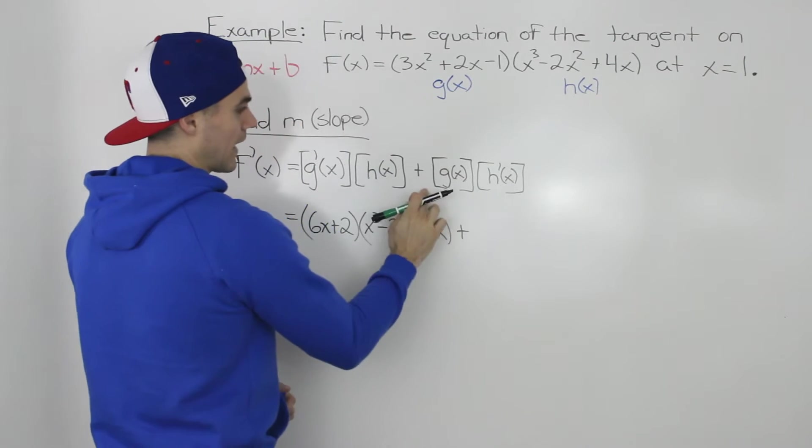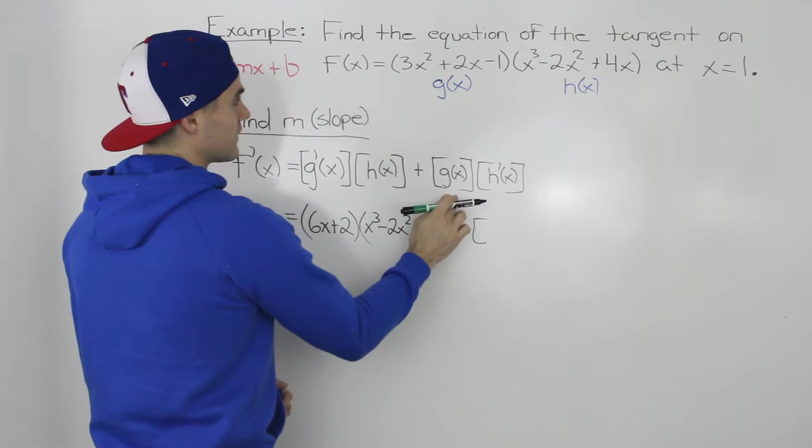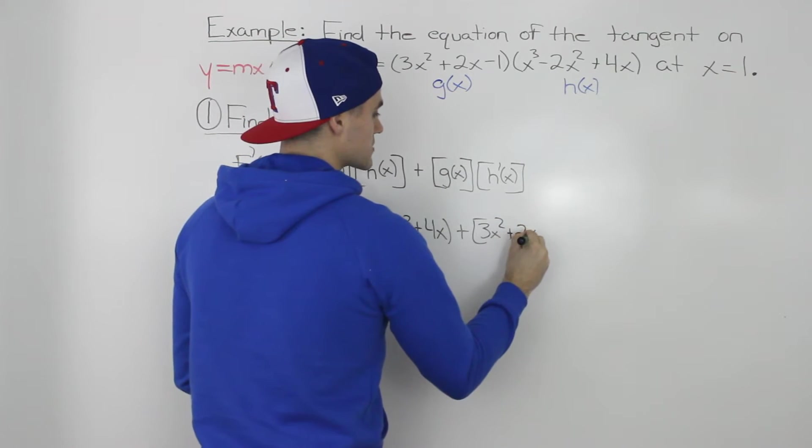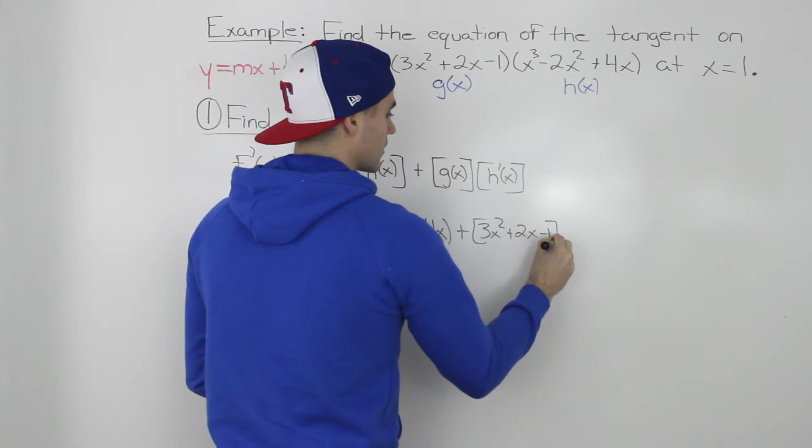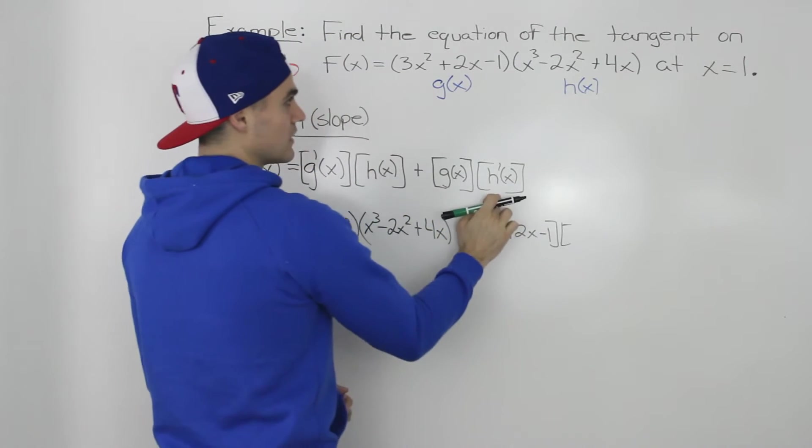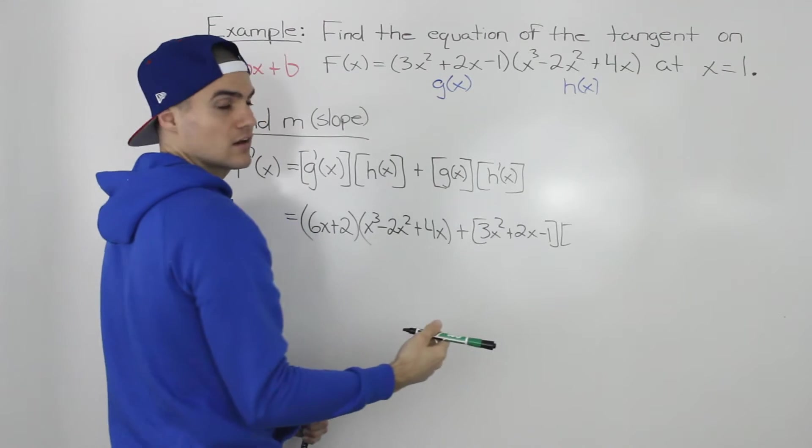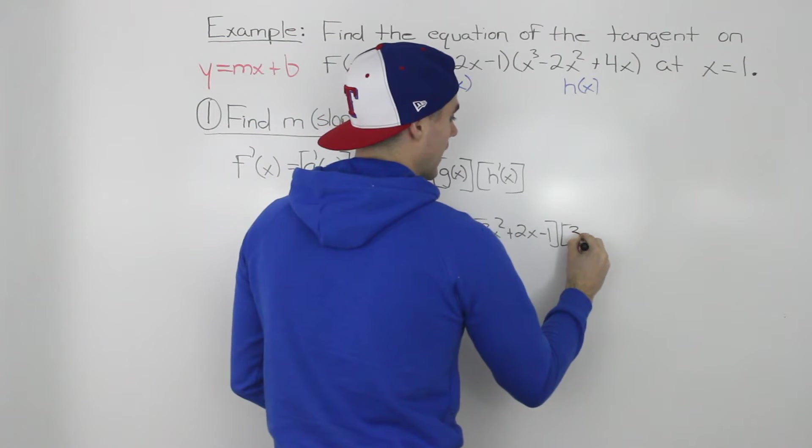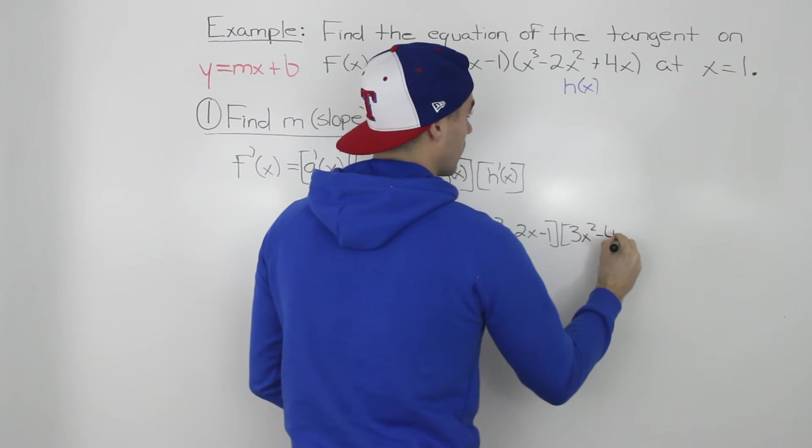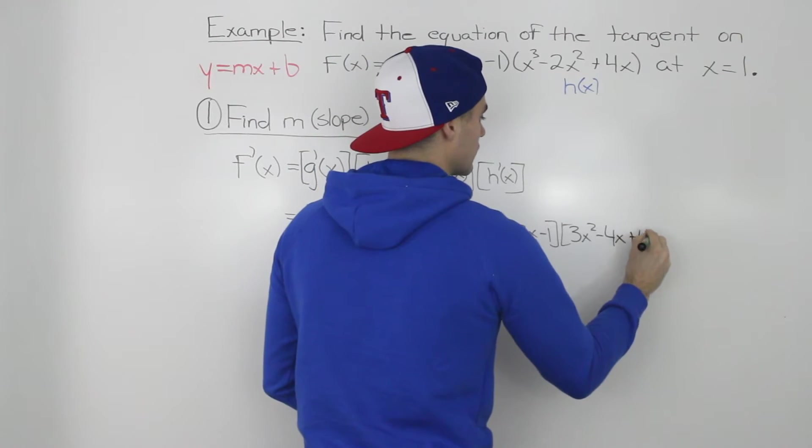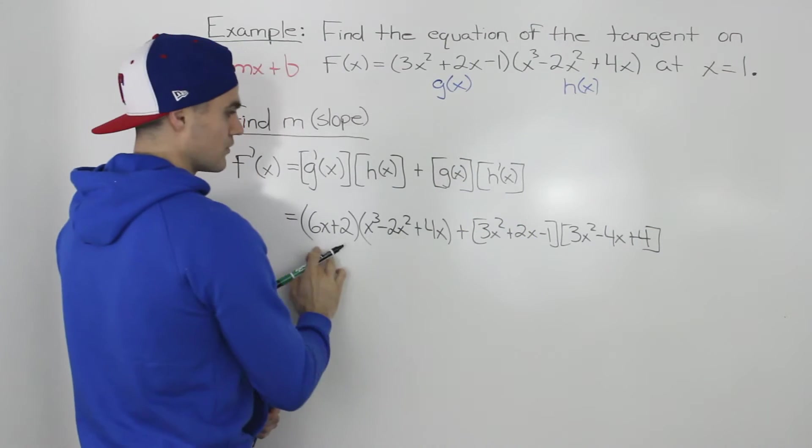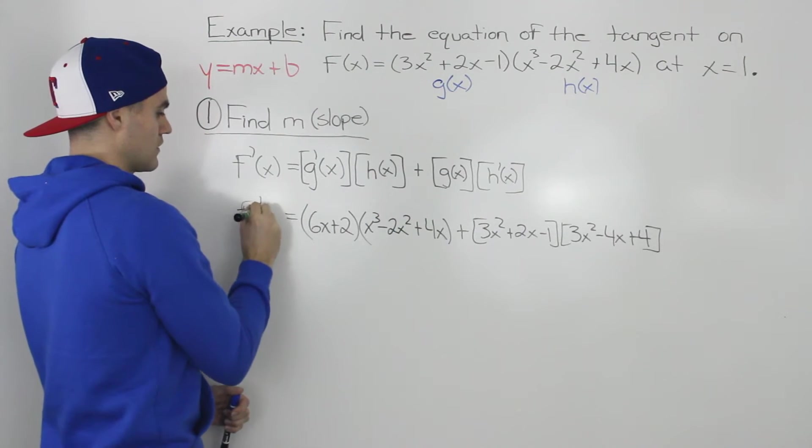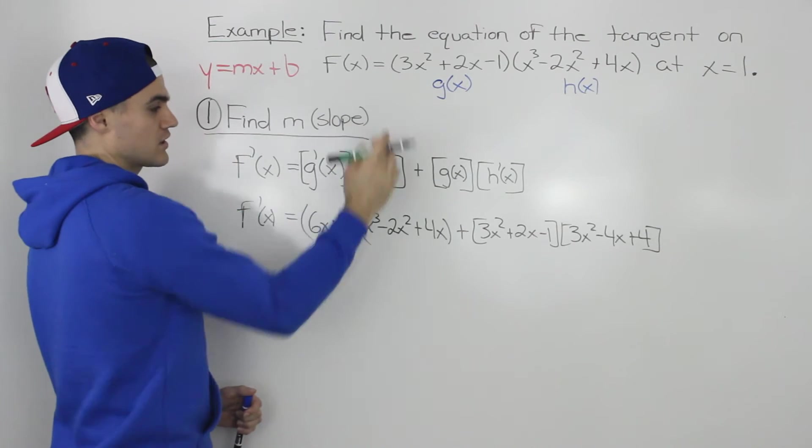Now we're going to add g of x as it is, so we would rewrite 3x squared plus 2x minus 1. And the derivative of that second function, we apply the power rule. So that would be 3x squared minus 4x plus 4. This whole term here represents the derivative of this function f of x.